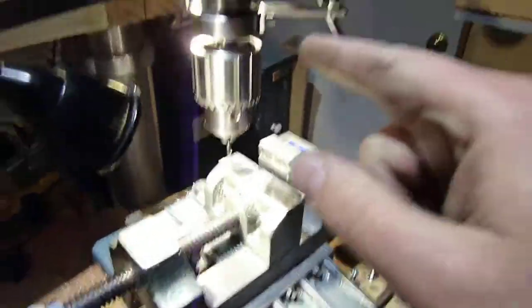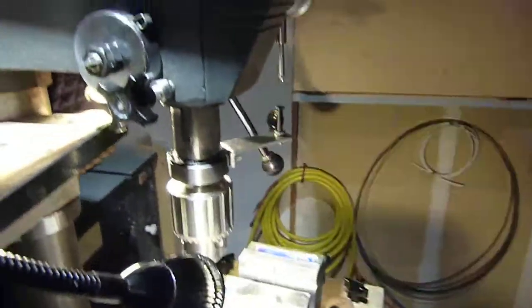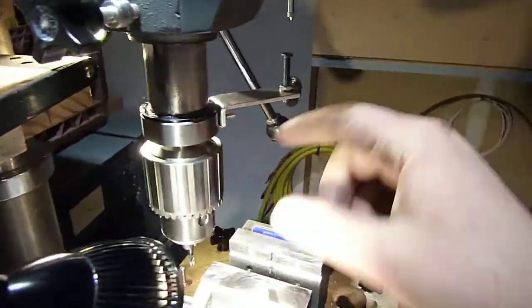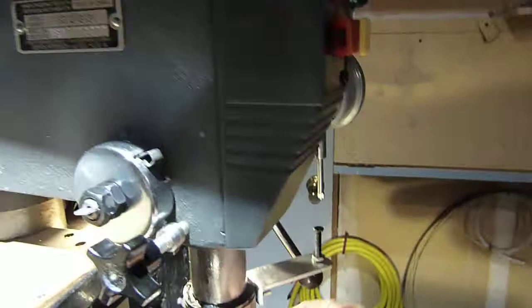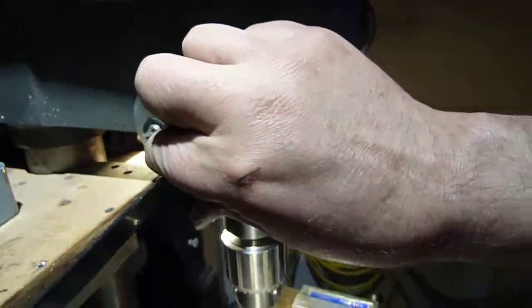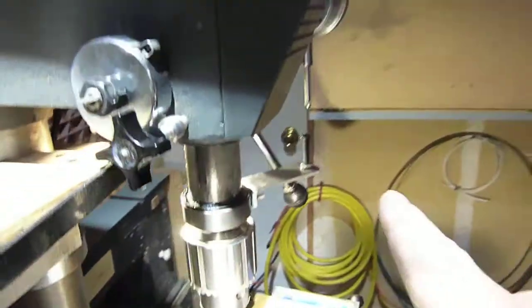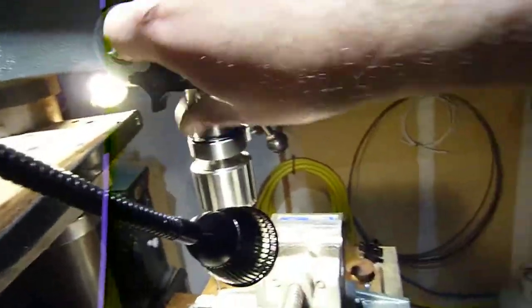This does two things for you. It sets a fixed depth of cut and it also pushes this whole assembly that way in its ways. So it takes any play you have in here out. These things are not milled particularly precise so there's always a little bit of movement in there. In fact in mine it's about half a millimeter.